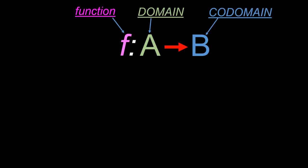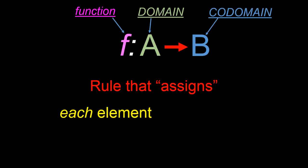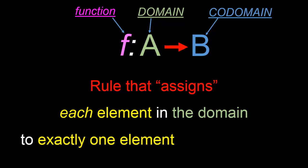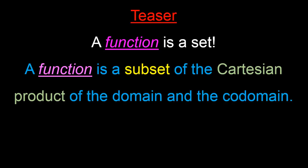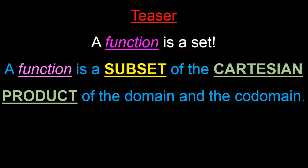Let me end this video with a teaser. We have repeatedly stressed that a function is a rule that assigns each and every element in the domain to one and exactly one element in the co-domain. This definition is perfectly fine. However, it turns out that mathematicians favor a more rigorous and precise definition — mathematicians actually define functions as a set. In particular, they define a function to be a subset of the Cartesian product of the domain and the co-domain of the function. We haven't yet learned what a subset or a Cartesian product is, but this is exactly what we'll be covering in the upcoming videos.